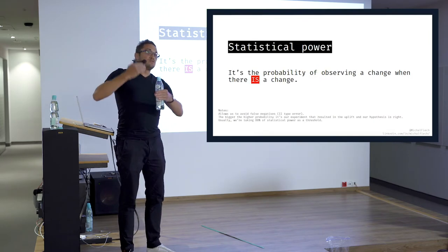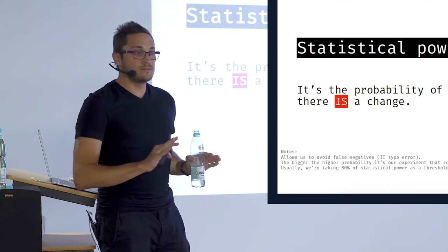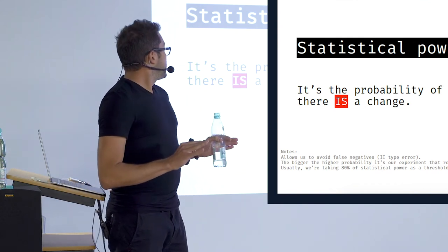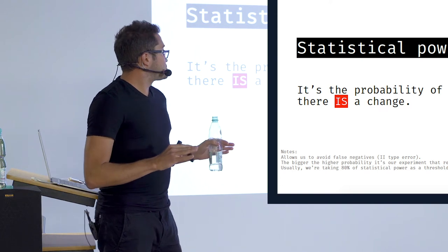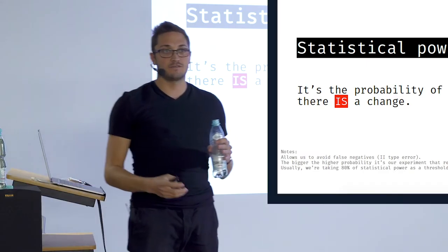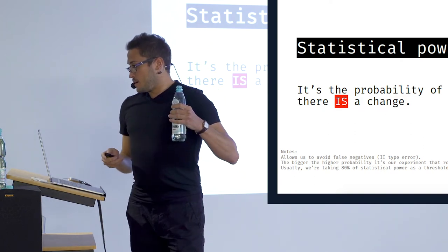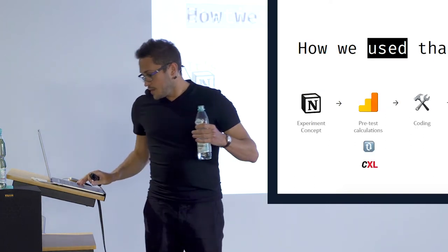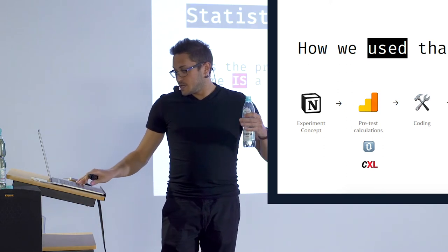And the second thing, we could say it's the opposite, but please don't tell this to any statisticians, that it's the probability of observing a change where there is a change. So it's like reassuring yourself that the change you did, designed, and tested really brings uplift. In this case, you want to be as sure as possible that you are right, so we want it to be as high as possible. Usually we are talking about 80% of statistical power as a threshold.